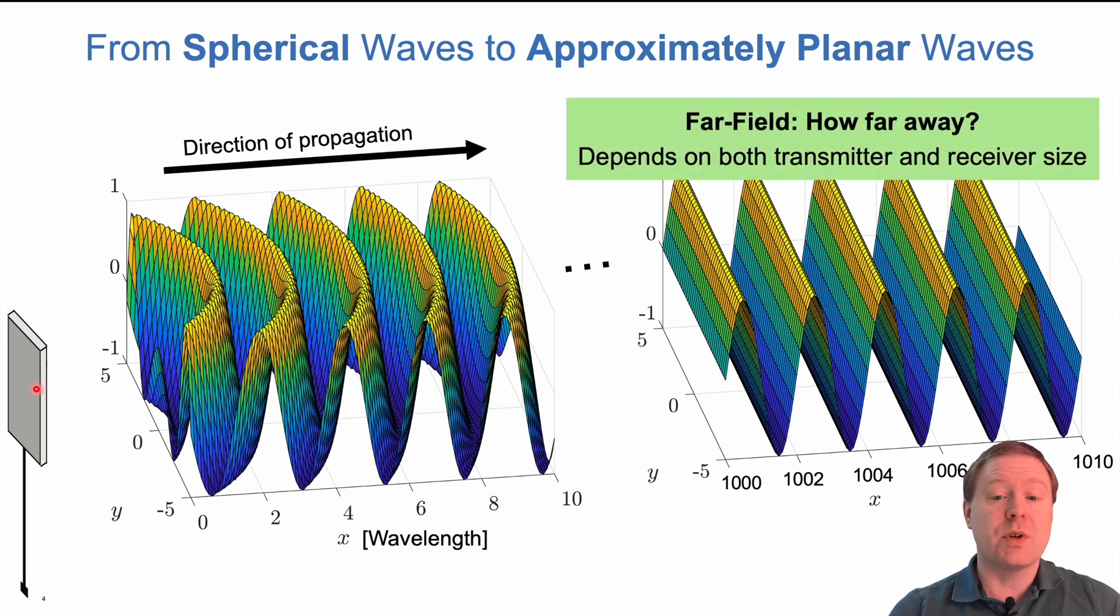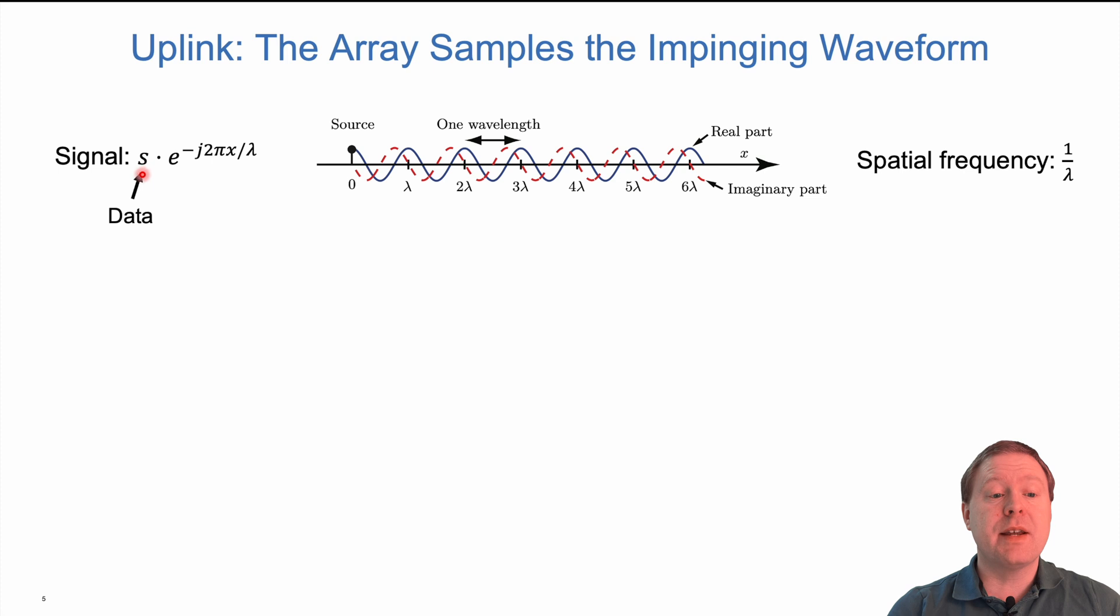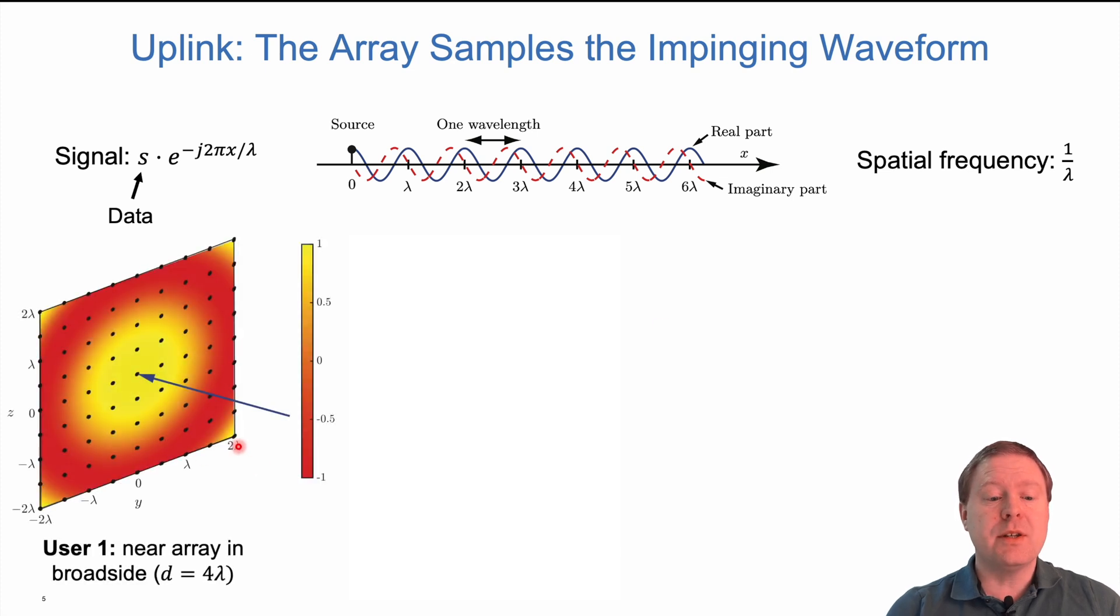Both the size of the transmitter and receiver determines whether we can say that the wave is approximately planar or not. Let us consider the uplink reception of a wave, with a data signal modulated on a complex exponential with wavelength lambda and distance x. In any x dimension we can see the sinusoid with distance between two peaks as one lambda, so the spatial frequency is one over lambda. If the transmitting user is four wavelengths away from this big array, four by four lambda, you can see how the wave is changing between one and minus one and back again, showing the curvature when it impinges on this big array.